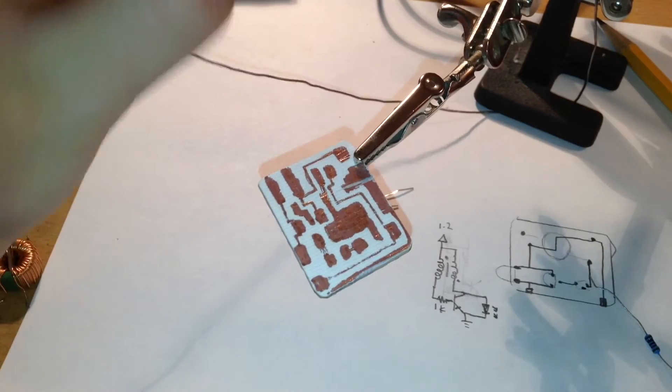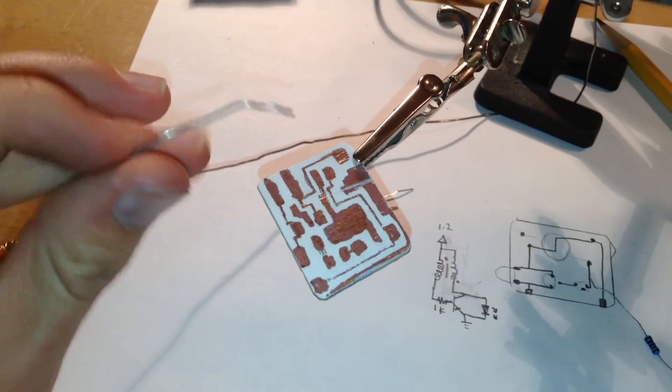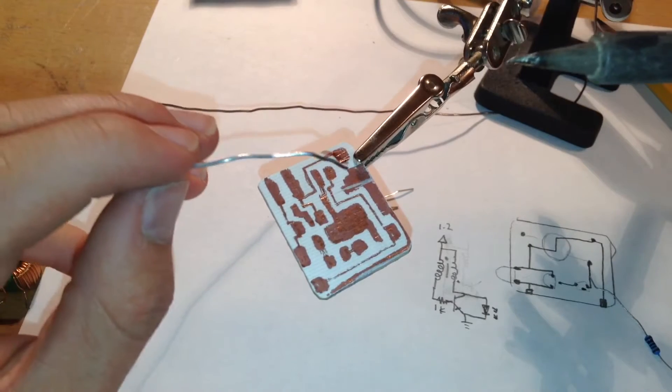The first thing that I'm going to do is tin all the little copper pads on this. This will allow me to solder the different components on.